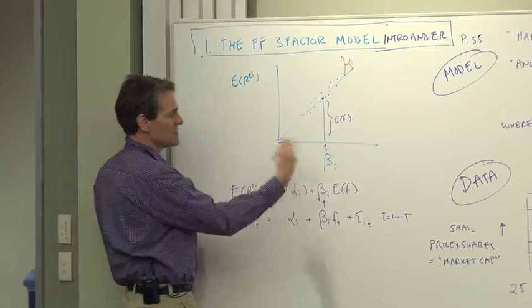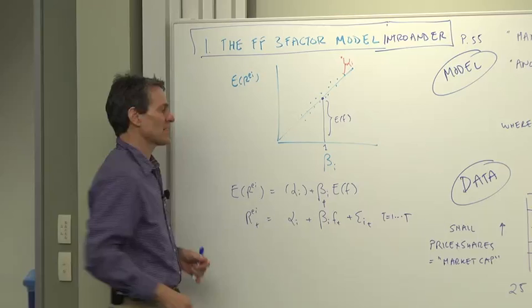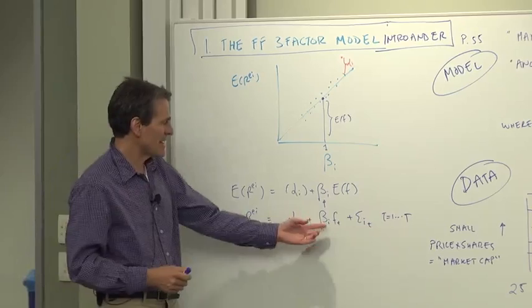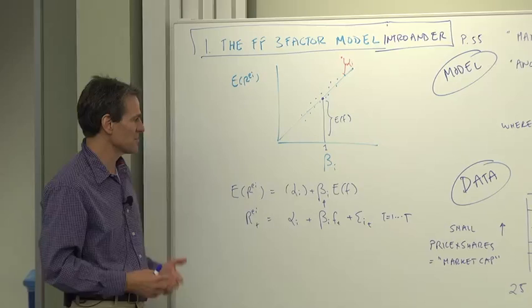This is a model where the factors are themselves tradable excess returns. So the slope of the line, the factor risk premium, is the mean of the factor, like the CAPM. The betas come from a preliminary time series regression where you see how returns co-vary with the factors through time. Then we should see expected returns higher where betas are higher.